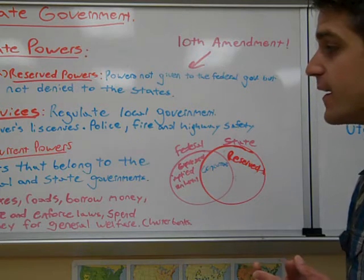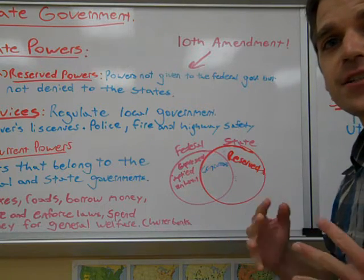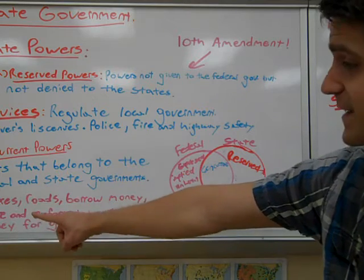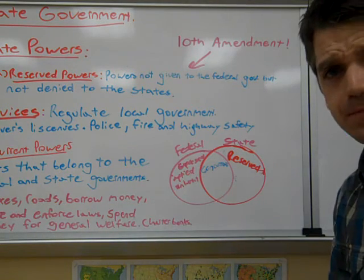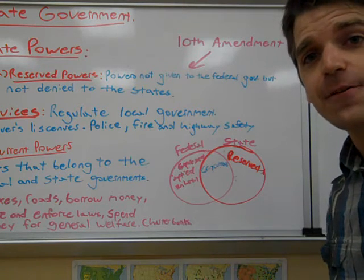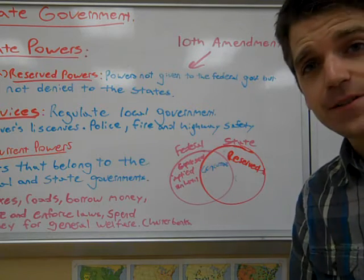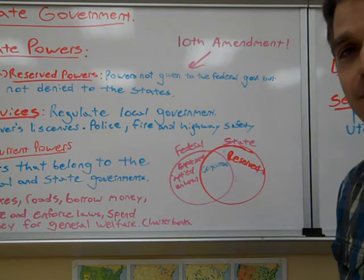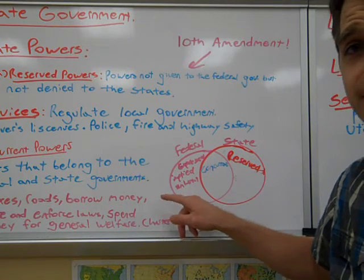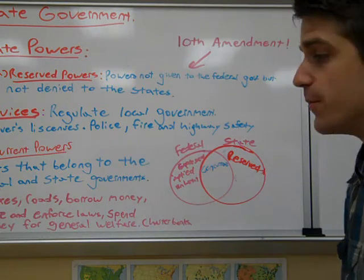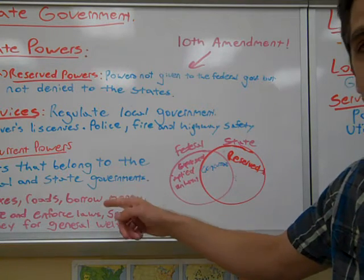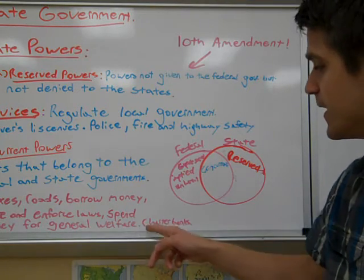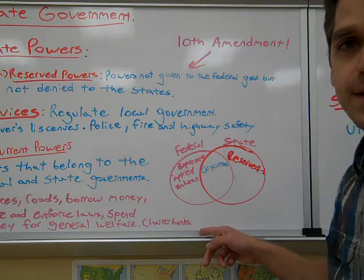Concurrent powers are powers shared by both the federal and state governments — they overlap. Examples include taxation, roads (such as maintaining I-95 or State Road 7), borrowing money, making and enforcing laws through the legislative and executive branches, spending money for the general welfare, and chartering banks and allowing businesses to operate in states.